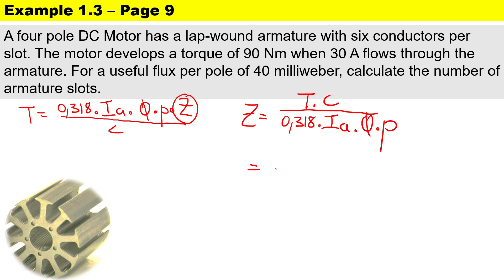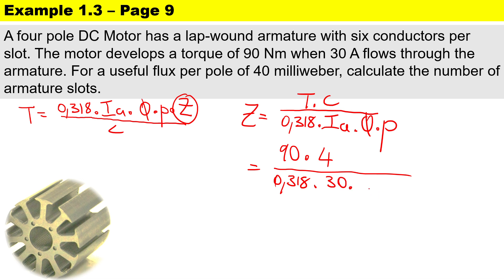Substituting the values: torque is 90 newton meters. This machine is lap wound, so c equals two times the number of pole pairs, giving four parallel paths. Divided by 0.318, armature current is 30 amperes, flux per pole is 40 milliweber — converting to weber by multiplying by 10 to the power of minus 3 — and the number of pole pairs is two. Therefore, the total number of armature conductors z is 471.698.